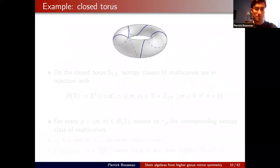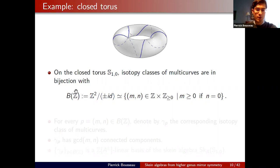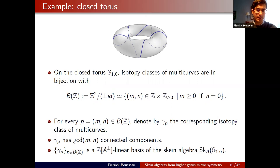As a quick example, for the closed torus, isotopy classes of multi-curves are in bijection with the set B(ℤ) of pairs of integers up to a global sign. Since a multi-curve is unoriented it has a homology class only up to sign, giving exactly an element of B(ℤ). For every p = (m, n) in B(ℤ) there is a corresponding isotopy class of multi-curves with gcd(m, n) connected components. This collection {γ_p} parameterized by B(ℤ) is a linear basis of the skein algebra of the closed torus.